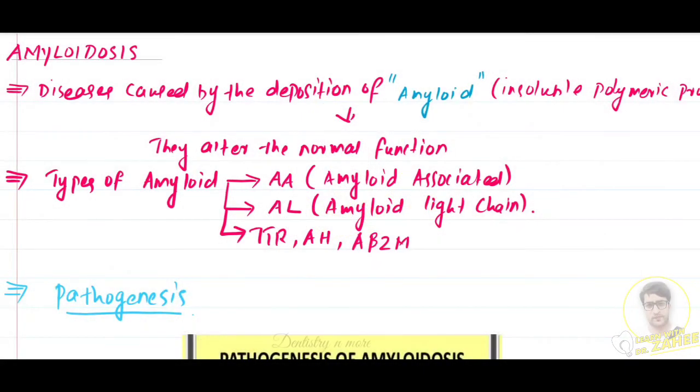Hello everyone, welcome back to another session in dentistry and more. Today we have amyloidosis. Amyloidosis is a disease caused by the deposition of an insoluble polymeric protein known as amyloid. Amyloid is an extracellular deposition of fibrillar proteinaceous substance which looks like a waxy substance, composed essentially of an abnormal protein. It is particularly found around the supporting fibers of blood vessels and basement membranes.